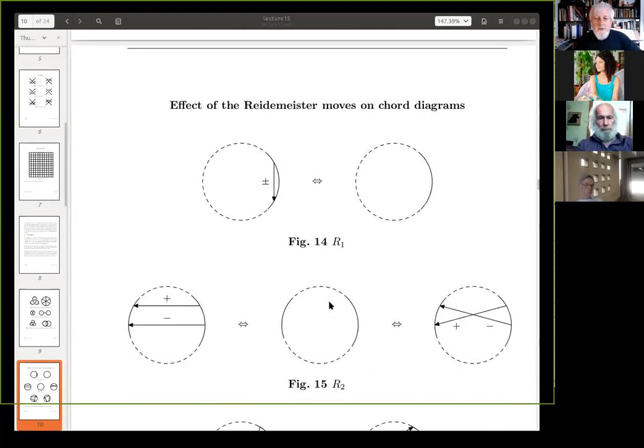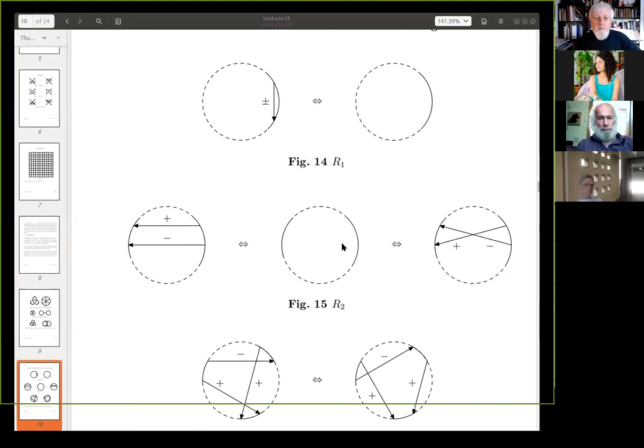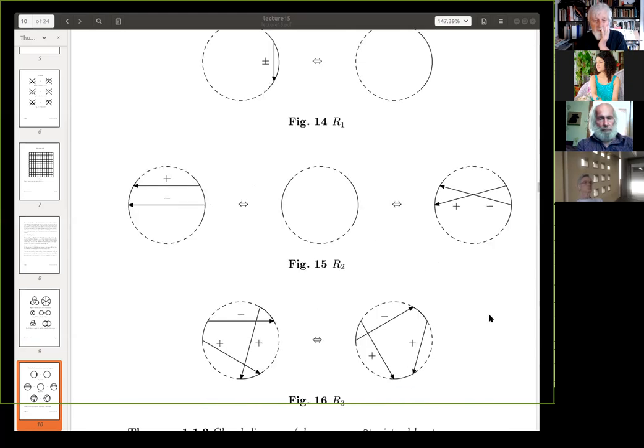Right, now, so, as I say, chord diagrams generate a knot theory by, these are the R1, the R2, and the R3 moves. This is how they affect the chords. So, I've just given you the picture here, I won't go into it. So, in other words, you've got a knot theory, which is realized by virtual knots, and they're the same as what I defined as surface knots.